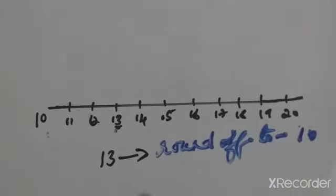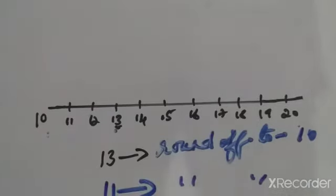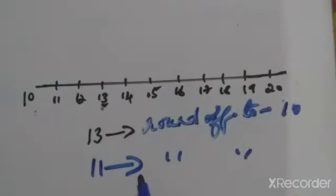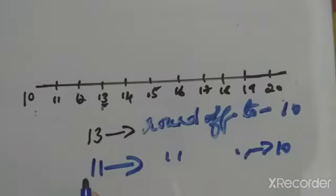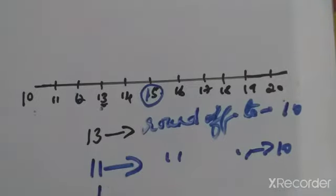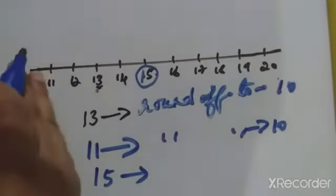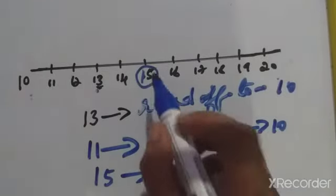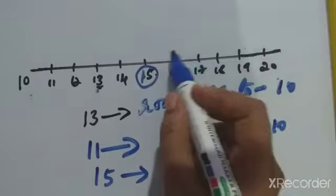Round off of 11: is 11 nearer to 10 or 20? It is nearer to 10, so round off of 11 is 10. If one pencil rate is 11 rupees, we can approximately say it is 10 rupees, but we cannot say 20 rupees.